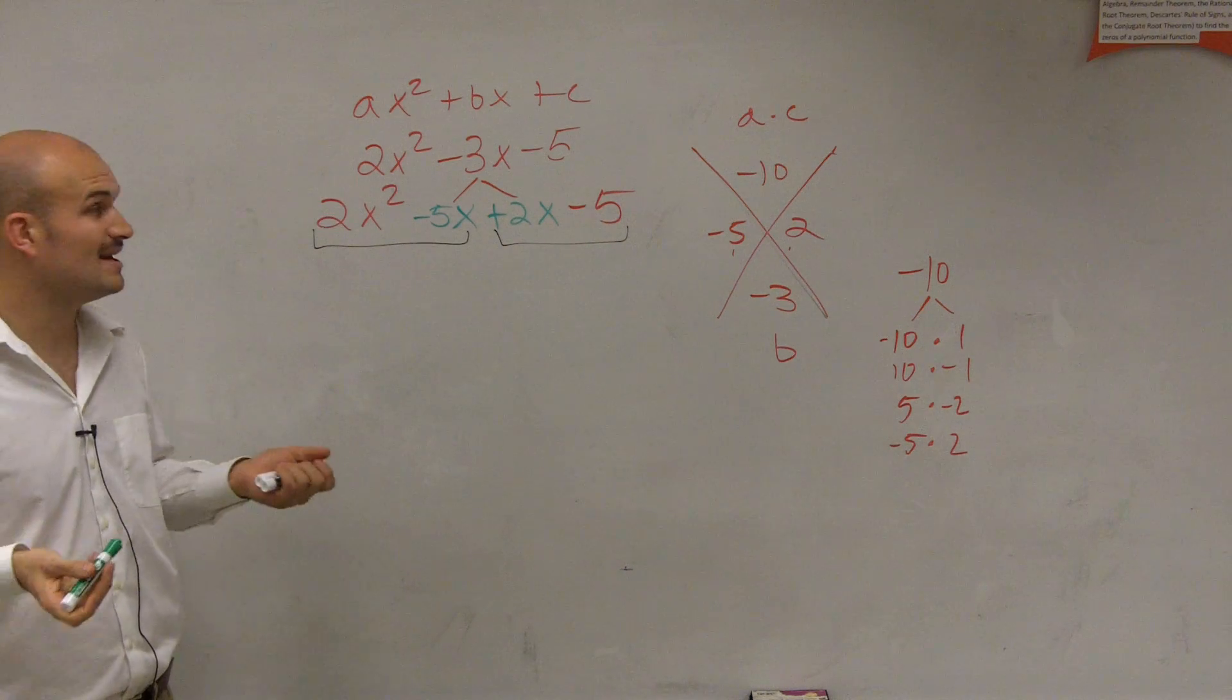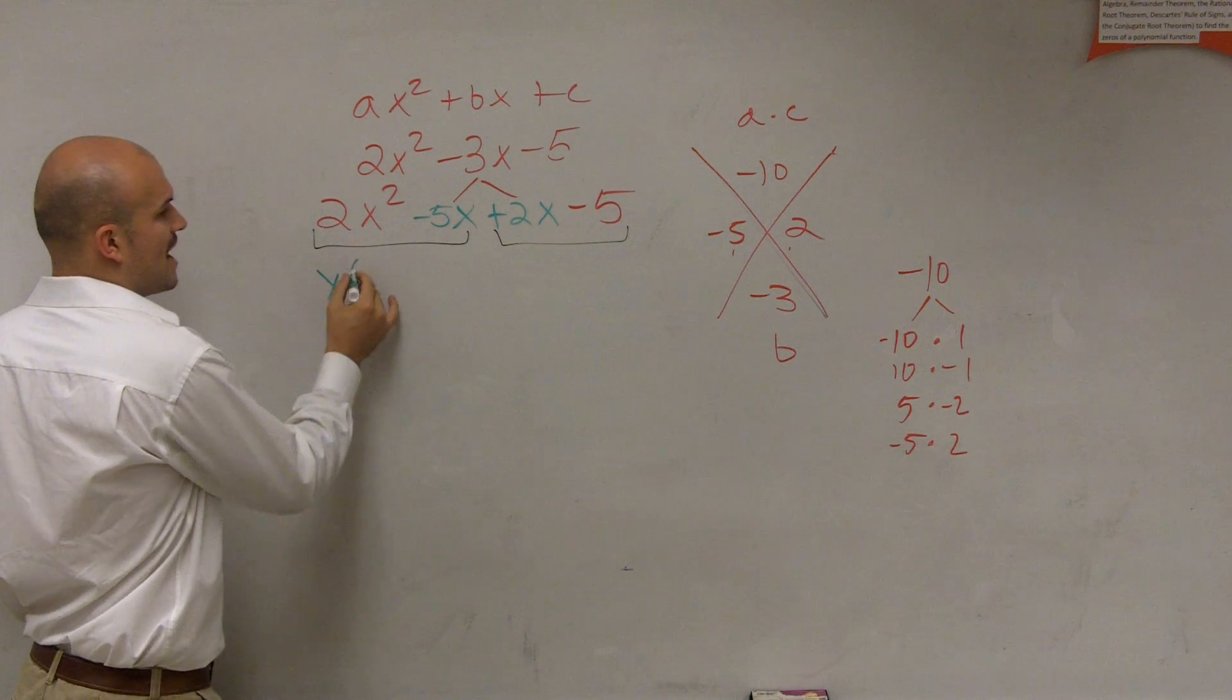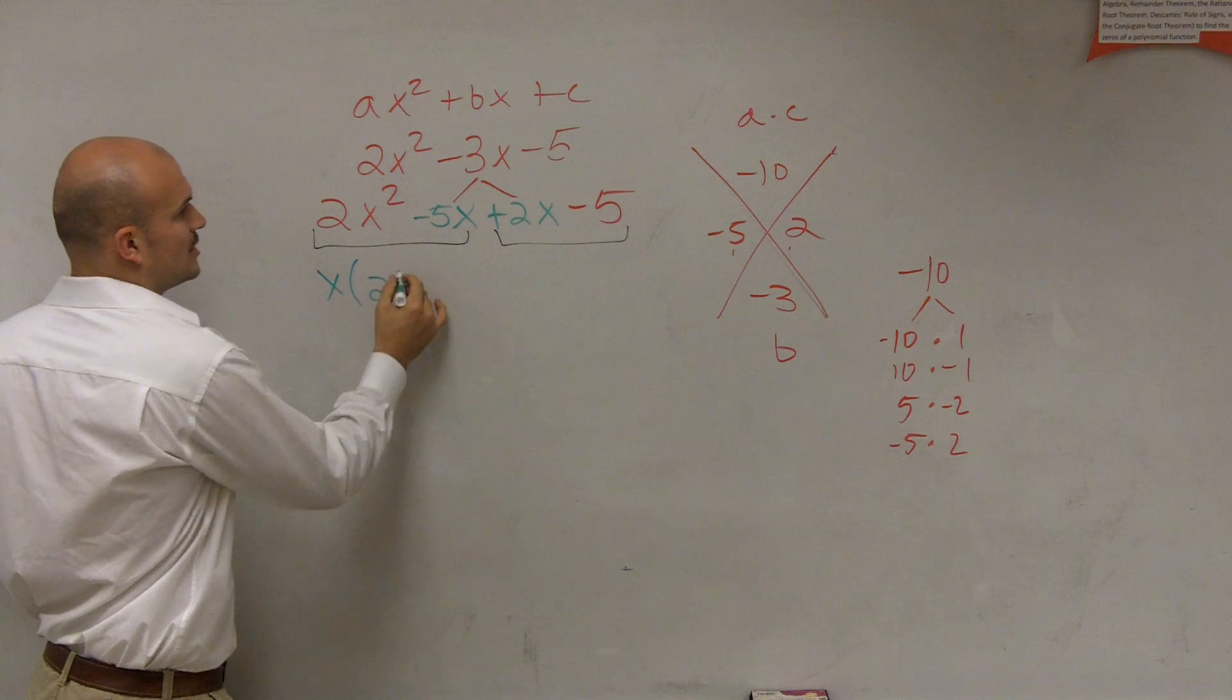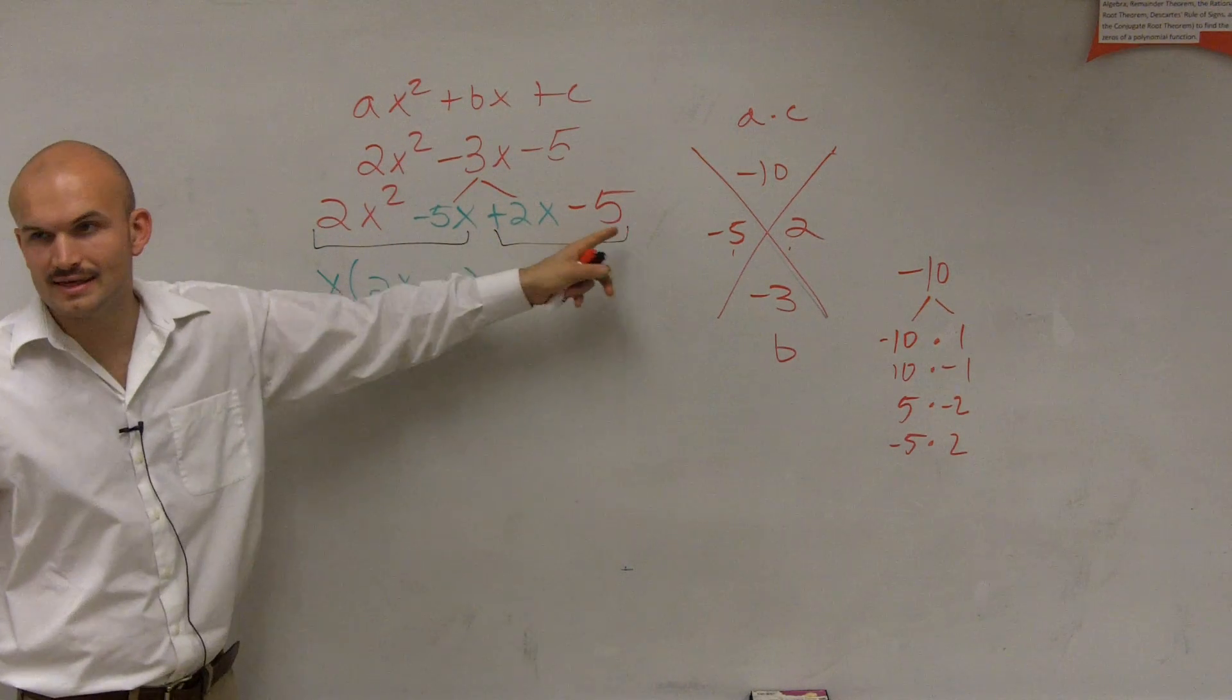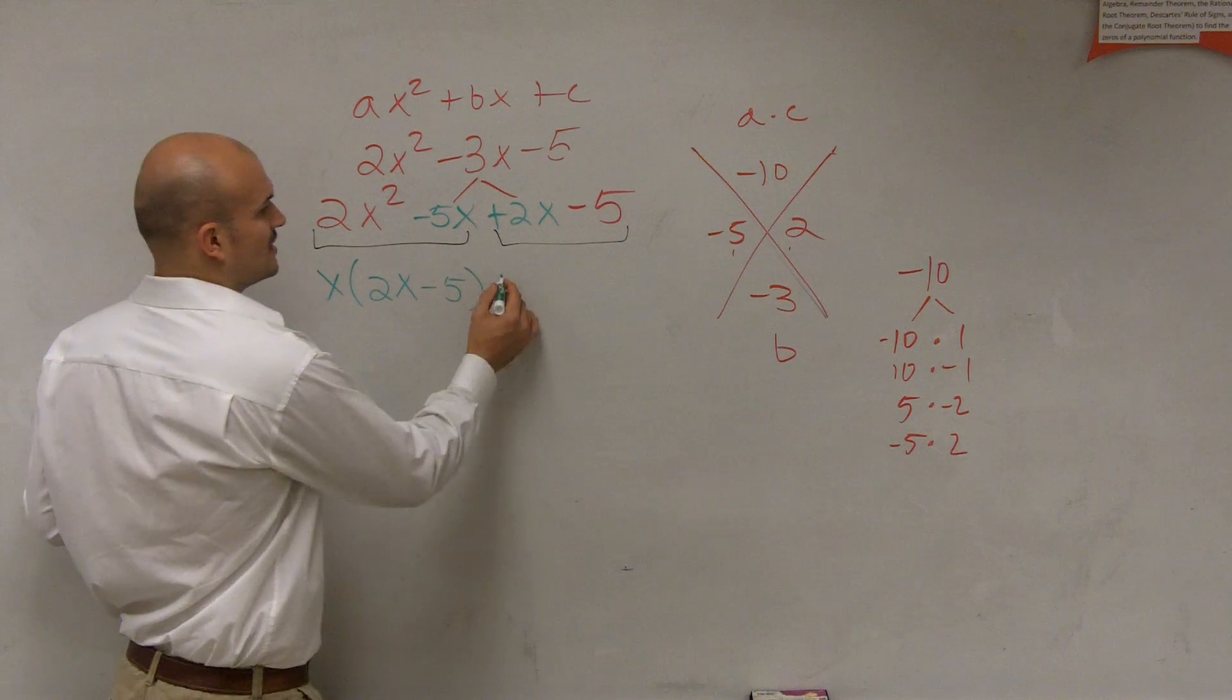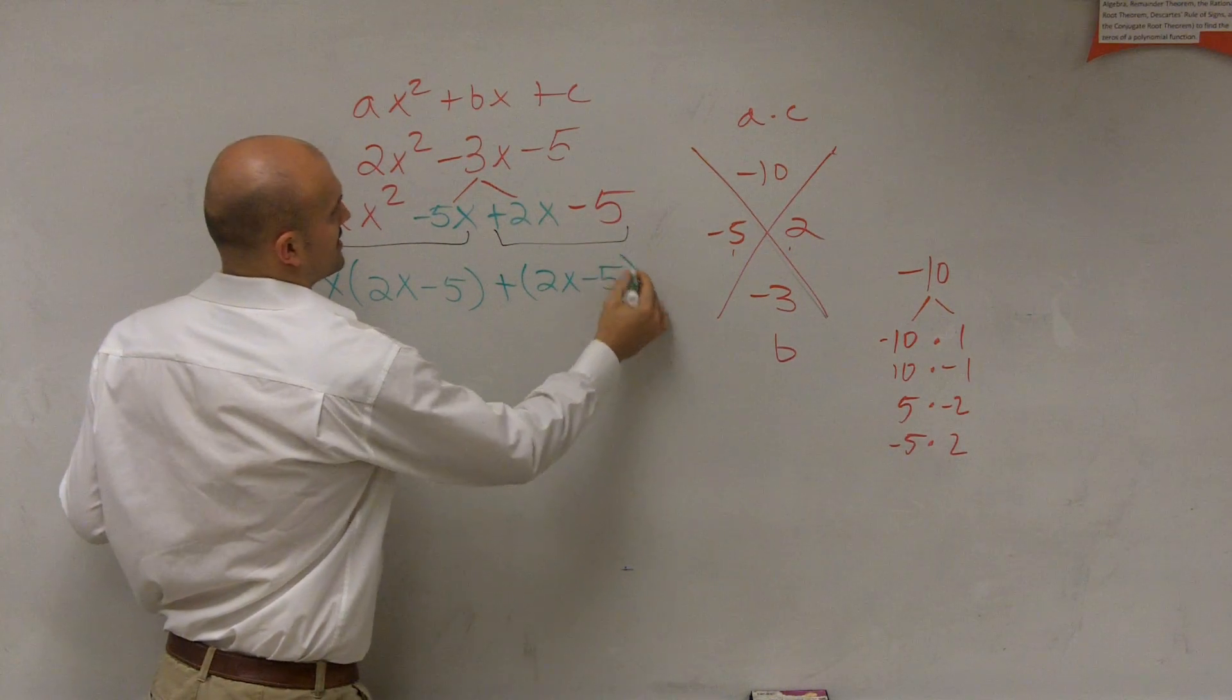Now is there something that these two terms share? Is there anything they share? How about an x, right? So you could pull out an x. So what I'm going to do is I'm going to factor out an x, so I'll be left with 2x minus 5. Then here, is there anything I can factor out? No. So I'm just going to leave that as plus 2x minus 5.